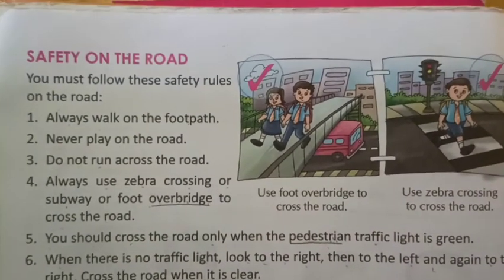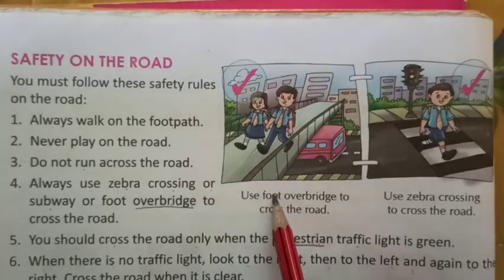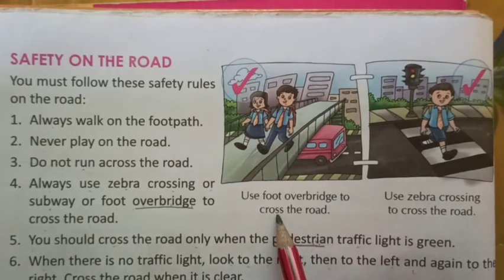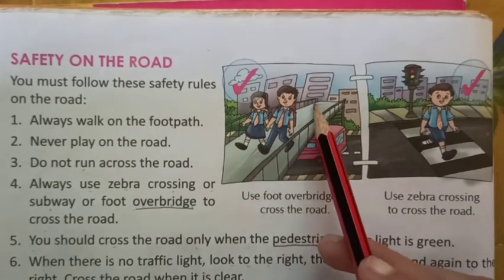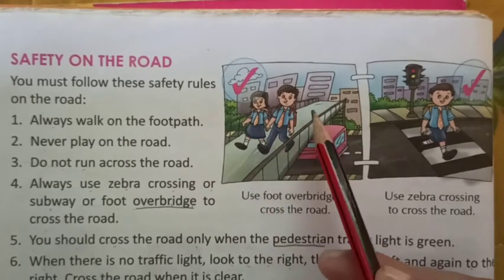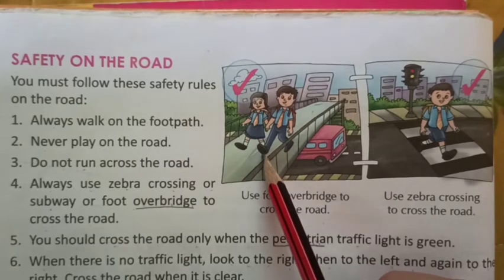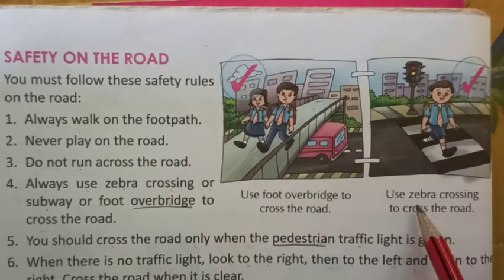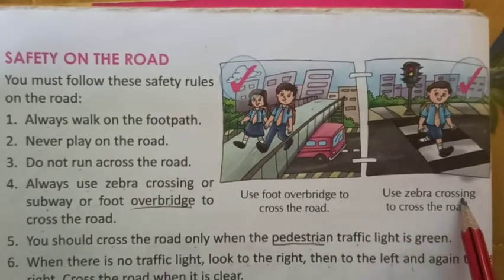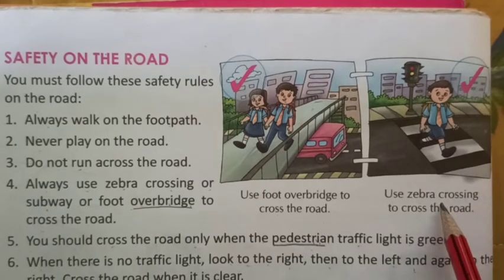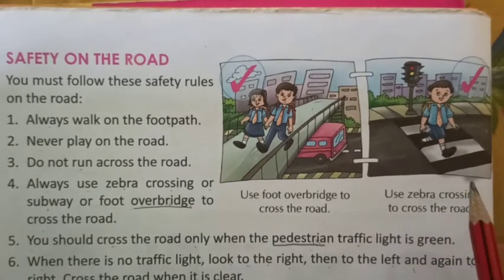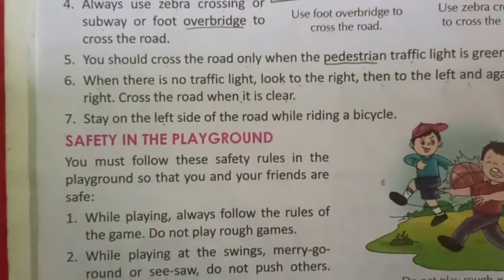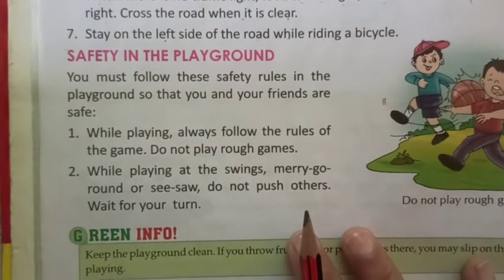Stay on the left side of the road while riding a bicycle. In these pictures you can see: use the foot over bridge to cross the road, as an over bridge is found at some places. Also, when using a zebra crossing, check whether the pedestrian traffic light is green — only then can you cross the road on a zebra crossing.